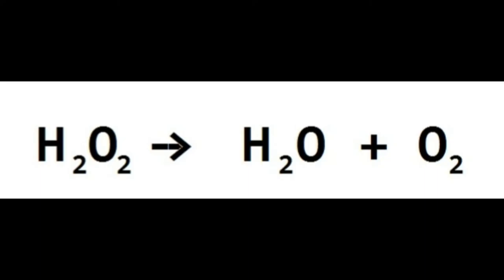If you put a 2 in front of H₂O, two times one gives two oxygens from water, plus two from O₂ equals four oxygens total. Now go back to the left — we need four oxygens. Put a 2 in front of H₂O₂: two times two is four. Done. Even numbers save you — so much less of a headache.